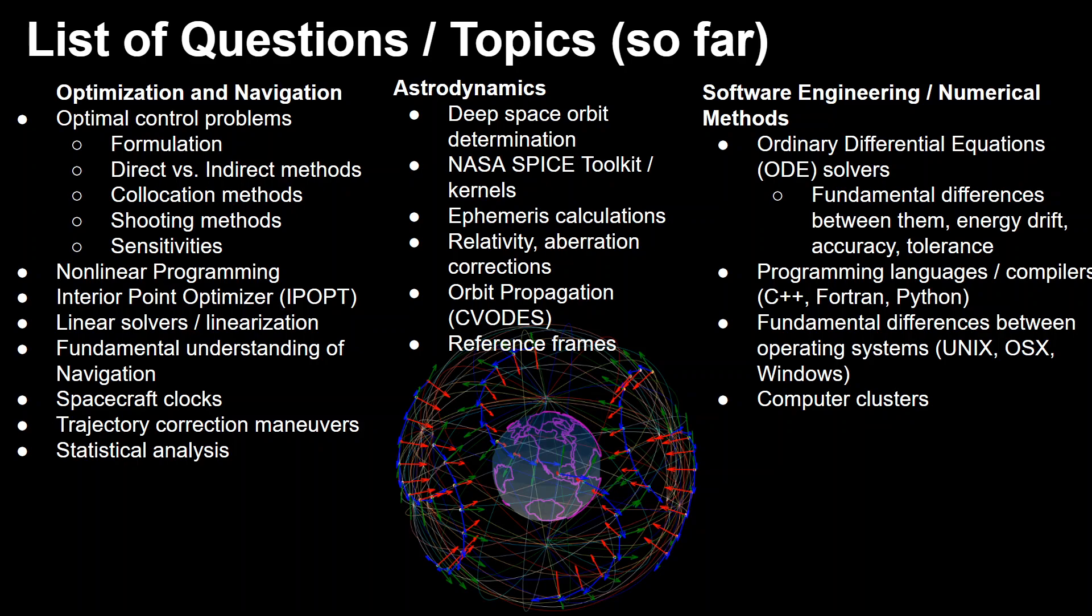There's linear solver slash linearization in general. And then for navigation, there's a fundamental understanding of what navigation is, because there's a general understanding of what GNC guidance, navigation, and control is. But actually getting down into the math of what you're actually trying to solve in navigation, I want to learn more about. There's spacecraft clocks, trajectory correction maneuvers like he did for Cassini and Europa, and statistical analysis involved in all this navigation.